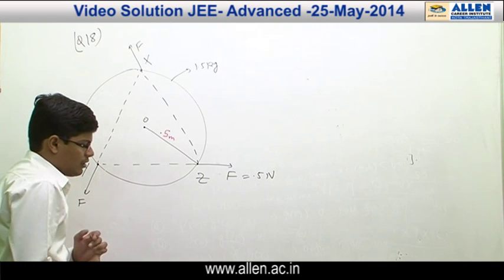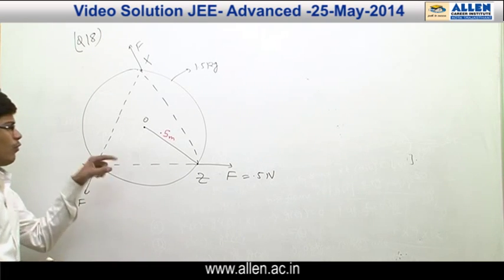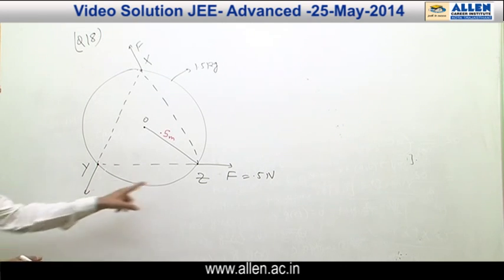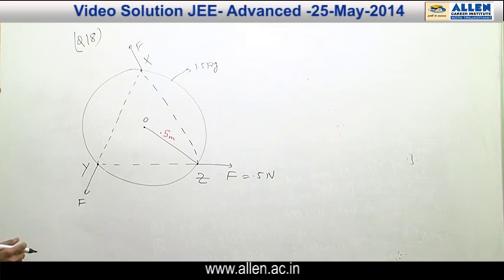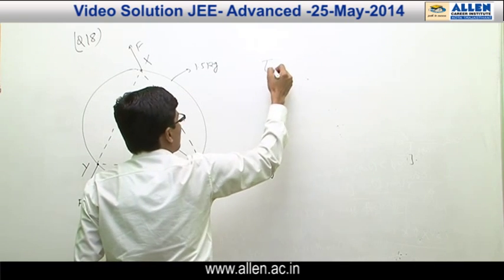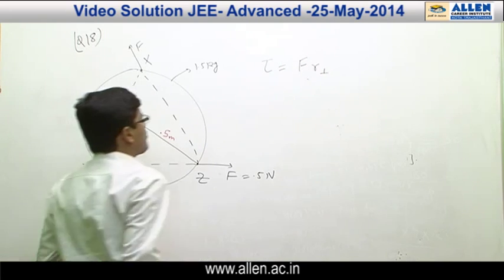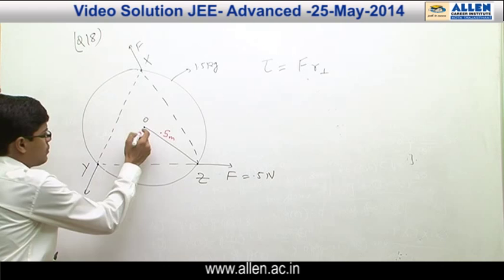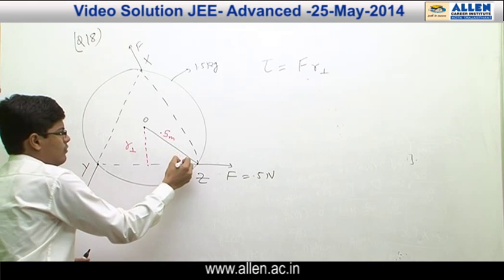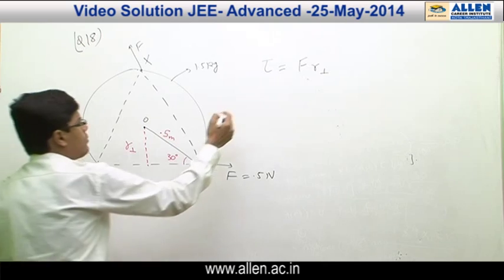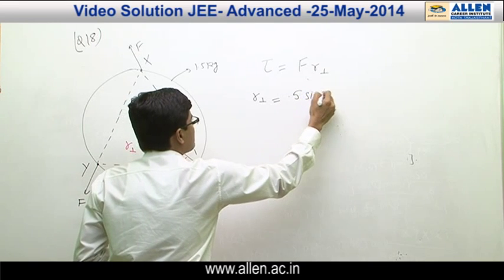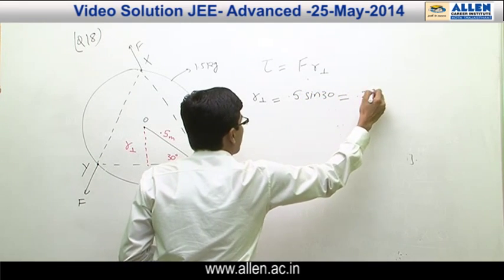The disc is at rest at t = 0. We need to calculate the angular velocity one second after the forces are applied. These three forces produce torque on the disc. For the torque of the force at point Z: torque = F × R_perpendicular. The forces form an equilateral triangle, so the angle is 30 degrees, giving R_perpendicular = 0.5 × sin30° = 0.25 meter.